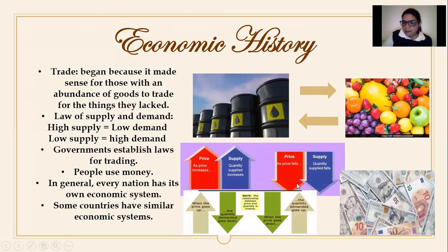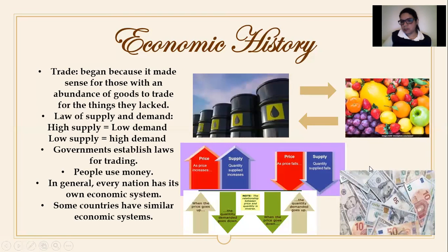As one example of trade: on one hand, we have a lot of petroleum, but other countries have food we can't grow here, so we trade petroleum for those products. This is how the law of supply and demand works in practice. And this is money as we know it — in the US, dollars are among the main currencies in the world.